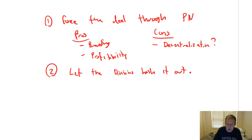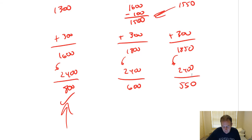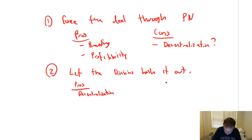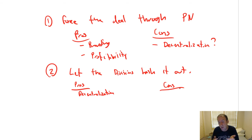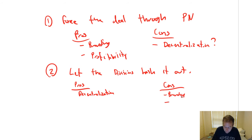Option two: let the divisions hash it out. That means let them do what they'd naturally do — Steve Frost would naturally accept BNC's deal. The pros here are it maintains decentralization, and there are real advantages to having managers act in their own best interest. The cons are the flip of the first option: branding issues — we're Dell installing Oracle servers — and it's the least profitable option for the company.